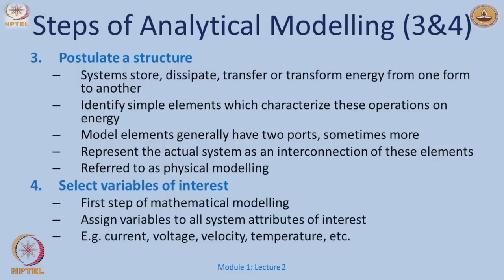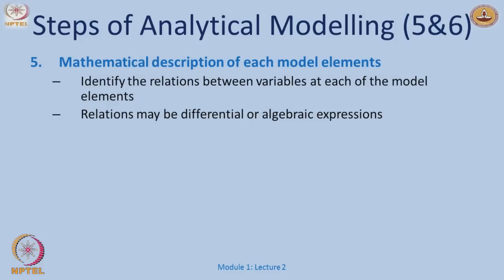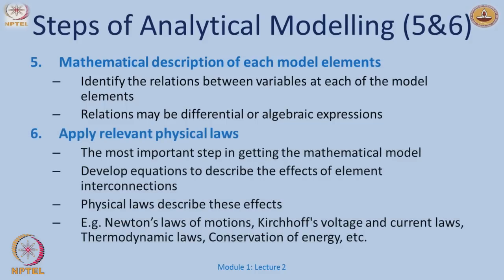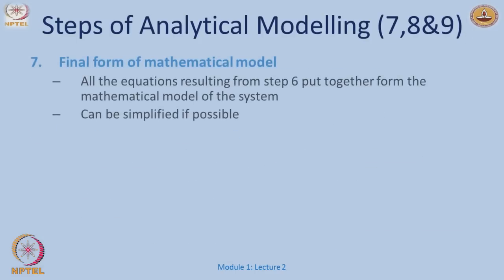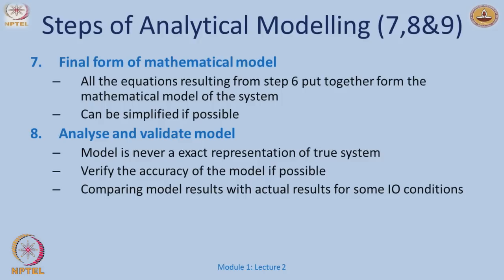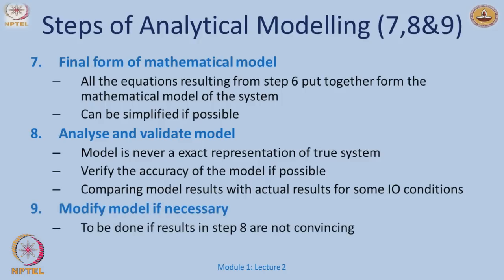Next, we select the variables of interest — for example, how current builds up through an inductor — and assign variables such as current, voltage, or velocity profiles. Each element has its own mathematical representation, which may be linear, static, or dynamic. Once we have models of all individual elements, we interconnect them and apply relevant physical laws such as Newton's laws, Kirchhoff's voltage and current laws, conservation of energy, or thermodynamic principles. After obtaining the final mathematical form, we eliminate any constraints to simplify the model, then analyze and validate it. If there are inaccuracies in the model behavior, we repeat the necessary steps.